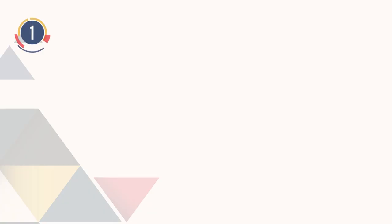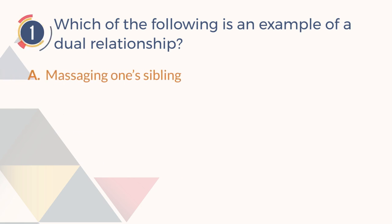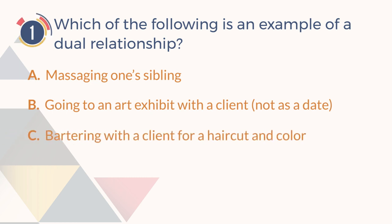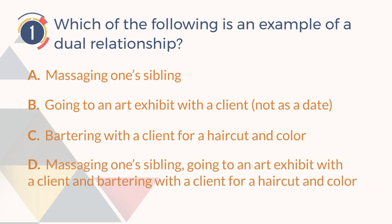Number 1. Which of the following is an example of a dual relationship? A. Massaging one's sibling. B. Going to an art exhibit with a client, not as a date. C. Bartering with a client for a haircut and color. D. Massaging one's sibling, going to an art exhibit with a client, and bartering with a client for a haircut and color.